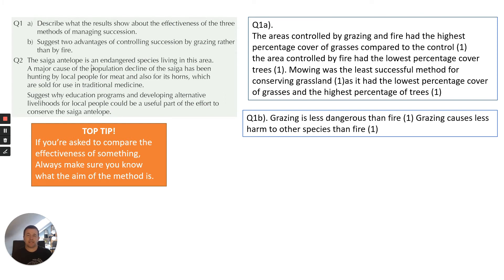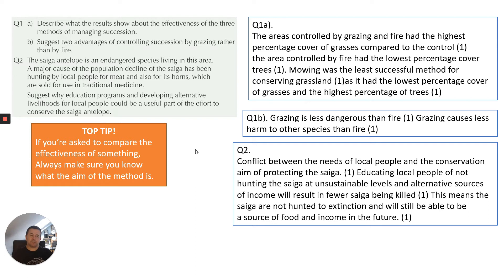Question two talks about the saiga antelope — an endangered species living in the area. It covers hunting by local people for meat and horns, and asks why education programs and developing alternative livelihoods for local people could help conserve the antelope. This is about the conflict between the needs of local people and the conservation aim. Educating local people about not hunting at unsustainable levels and providing alternative income will result in fewer antelope being killed, so they won't be hunted to extinction and will still be a source of food and income in the future.